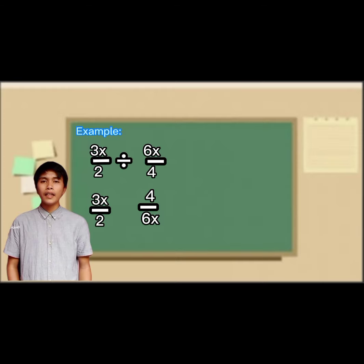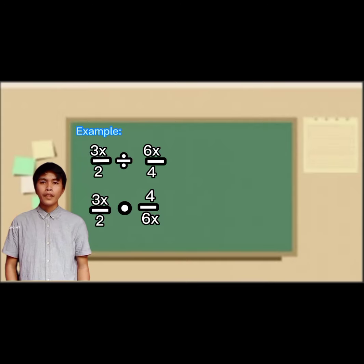Our second step is to change the division to multiplication. So, our given will become 3x over 2 times 4 over 6x.